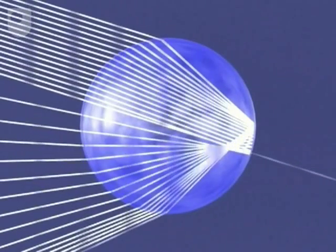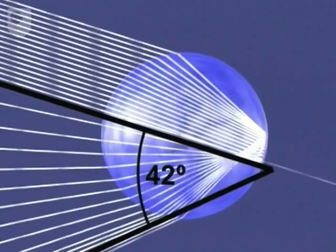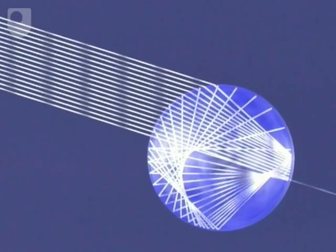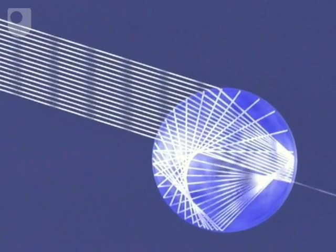For the primary bow, the angle between the direction of the sunlight and the emerging ray was around about 42 degrees. But if the light is reflected twice, the concentration of emerging rays occurs at an angle of about 51 degrees to the sunlight.